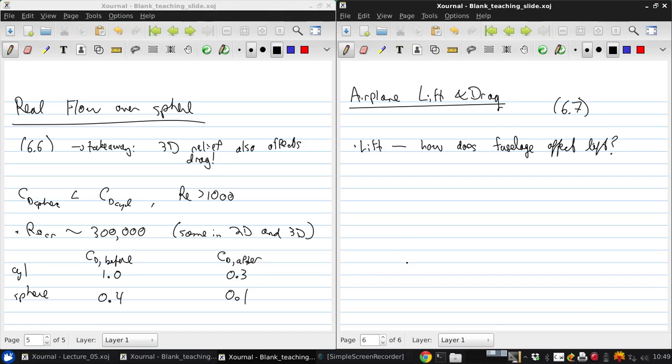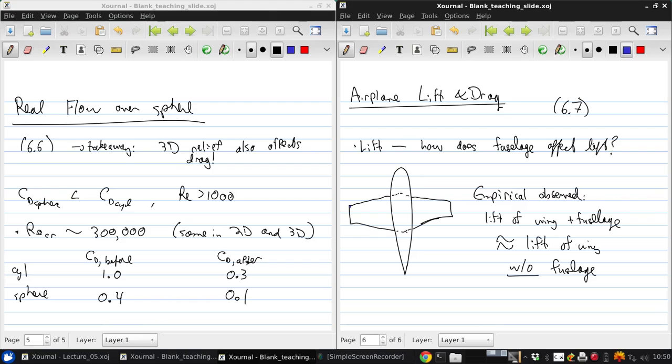Let's say we have a top-down view of an aircraft. Basically, part of the wing is missing because it's buried inside the fuselage or sitting right on top of the fuselage. But empirically, it's been observed that in general, the lift of the wing plus fuselage combination is basically equal to the lift you would get from the wing without the fuselage. So the lift of this is the same, basically, as the lift of this uninterrupted wing.